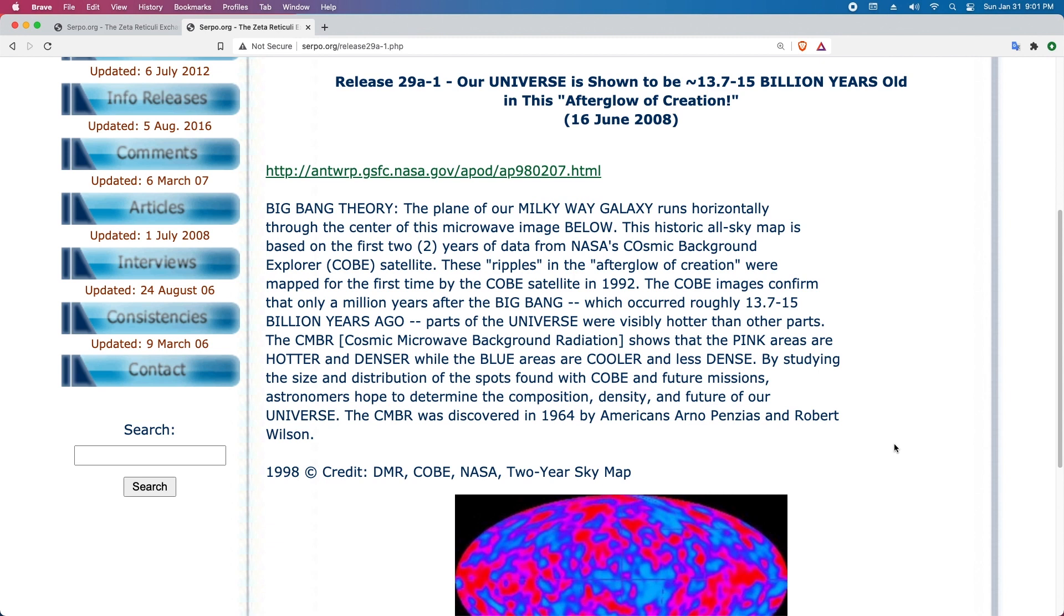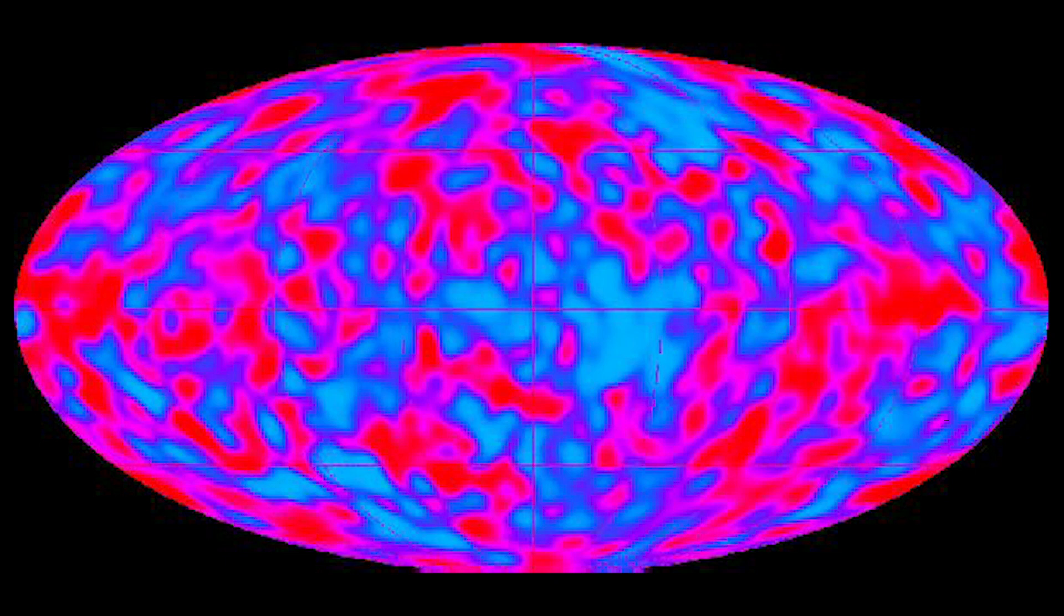Our Universe is shown to be about 13.7 to 15 billion years old in this afterglow of creation. Big Bang Theory: The plane of our Milky Way galaxy runs horizontally through the center of this microwave image. This historic all-sky map is based on the first two years of data from NASA's Cosmic Background Explorer satellite. These ripples in the afterglow of creation were mapped for the first time by the COBE satellite in 1992. The COBE images confirmed that only a million years after the Big Bang, which occurred roughly 13.7 to 15 billion years ago, parts of the universe were visibly hotter than other parts.